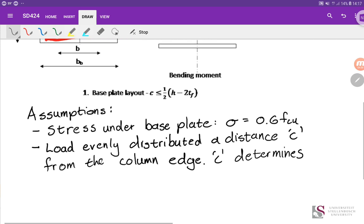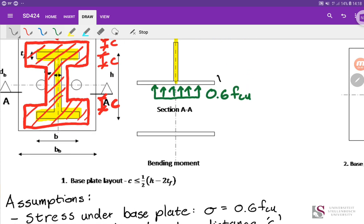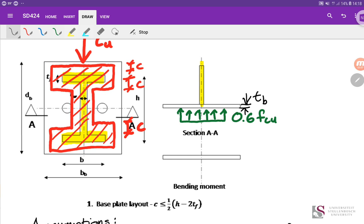So as I was saying, load evenly distributed a distance C from the edge of column and then C determines the baseplate thickness. Determines the required baseplate thickness, which we will call tb. T subscript b. And that will be this thickness here. Thickness of baseplate. Because in a normal design, once you have the loads from the column and you're designing your steel building, that's your main thing you're trying to calculate, is how thick does my baseplate need to be, but also then how big does the baseplate. Here we already have db and b be the depth and breadth of the baseplate noted.